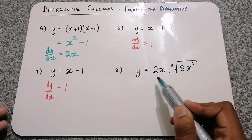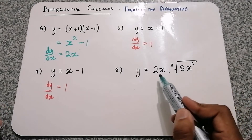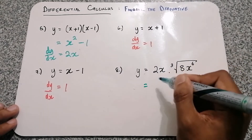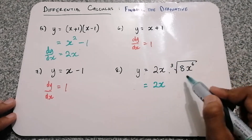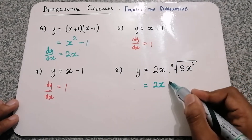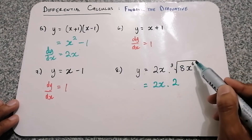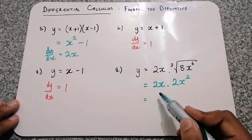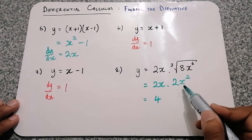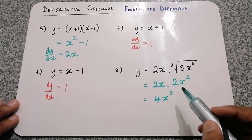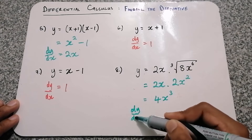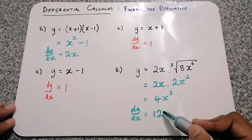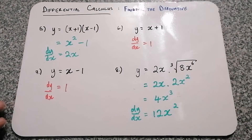Question 8: we first need to simplify. There is still some multiplication going on, so we do that before taking the derivative. I'm going to simplify by evaluating the cube root. The cube root of 8 is 2, and the cube root of x to the power of 6 is x squared. Simplifying further: 2 times 2 is 4, and x times x squared is x cubed. Now we can take the derivative. The exponent multiplied by the number in front is 12, and the exponent minus 1 gives us 2. So the answer is 12x squared.